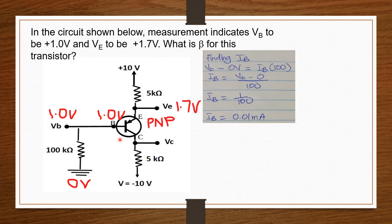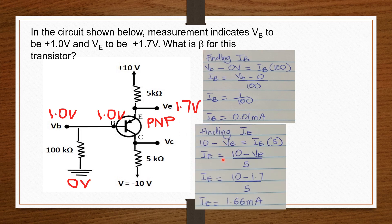Now that we have found IB, let's find IE. We have 10 volts and VE equals 1.7 volts, with a resistor of 5 kilo ohms. So: 10 volts minus VE equals IE times 5. Making IE the subject, we get 10 minus VE over 5. Inputting our values, IE equals 1.66 milliamperes.